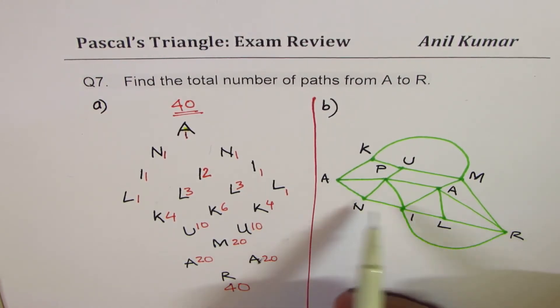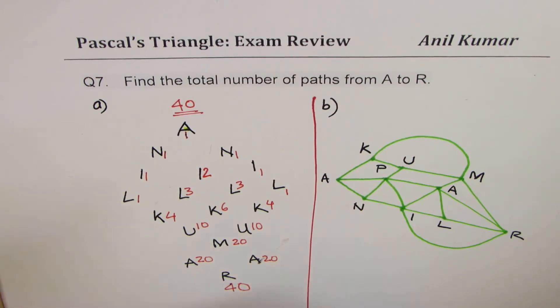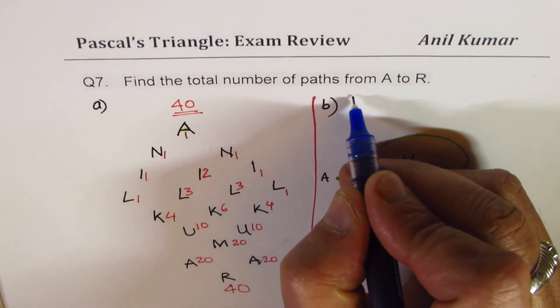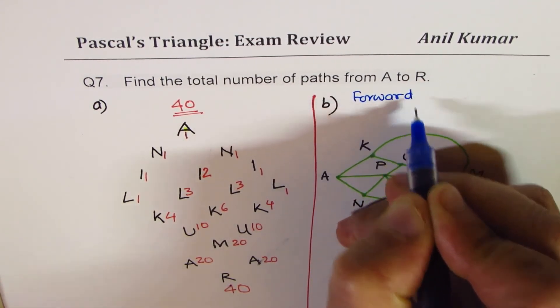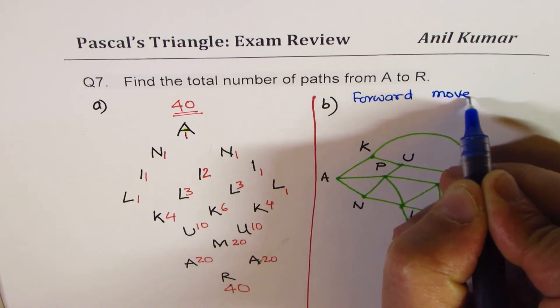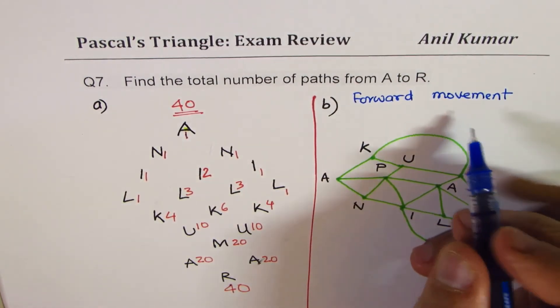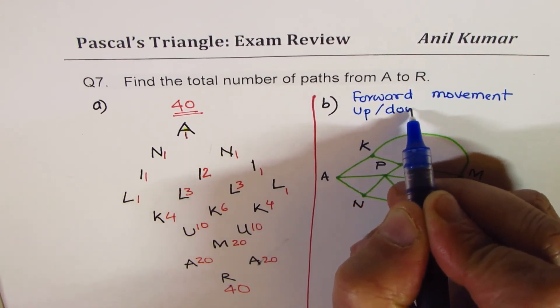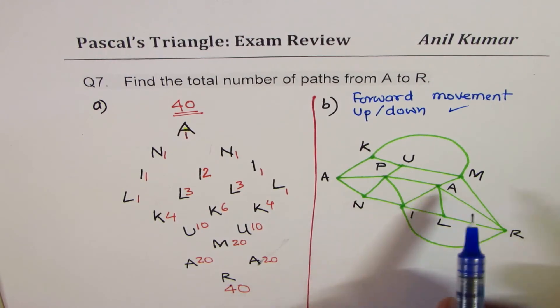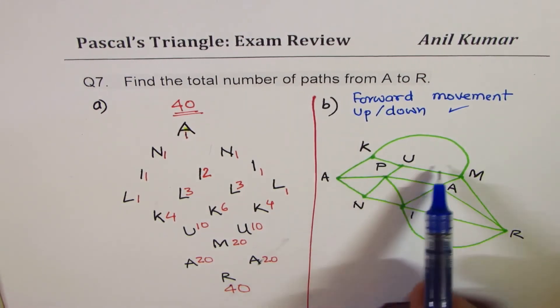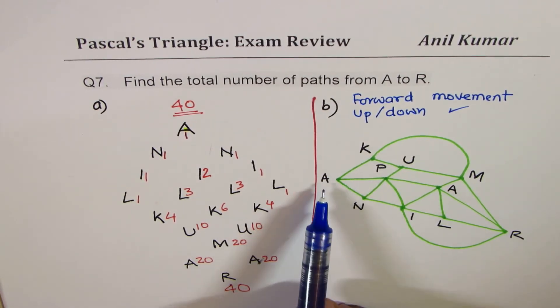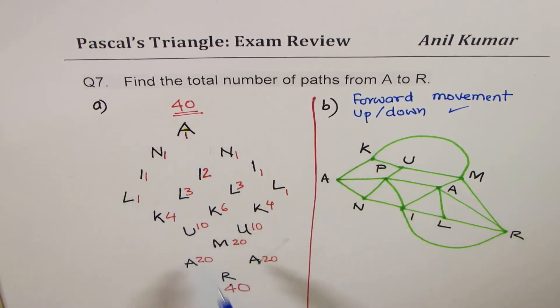Now let's do this one. Now here, let me write down the condition that you can only move right. You cannot return. So you can only move forward. Forward movement. Not backwards. Up is allowed and down is also allowed. But backward is not allowed. So you can't come back. So reverse is not allowed. Now you find path from A to R.